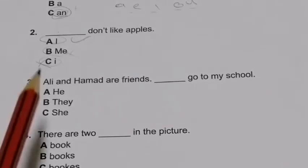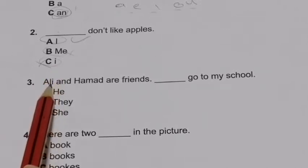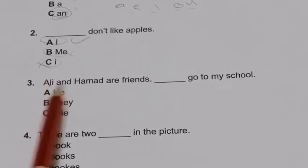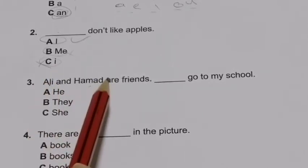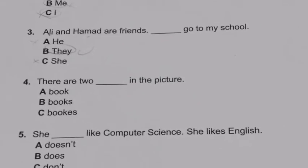Number 3: 'Ali and Hamad are friends.' We have two persons here, so they are plural. For a plural subject I can't choose 'she' or 'he,' so I'm going to choose 'they.' I will choose 'they.'